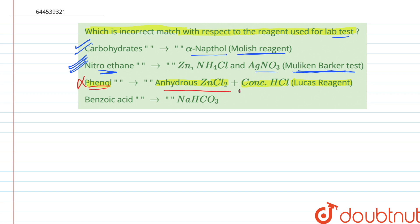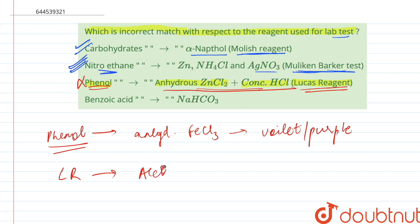If we have to test phenol, a phenol is tested by anhydrous FeCl3 wherein it turns violet or we can say purple. So this is the test for phenol. And the Lucas reagent test is given by alcohols, so therefore these two are incorrectly matched.